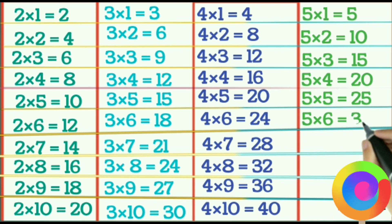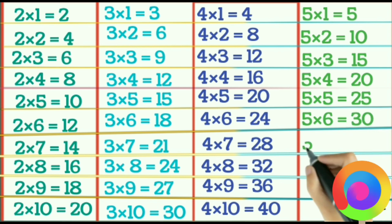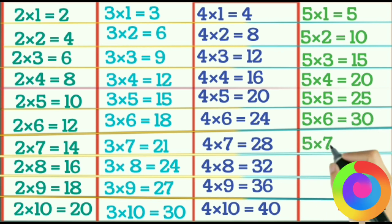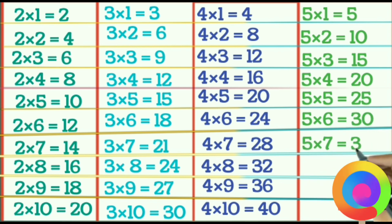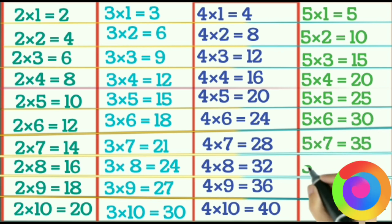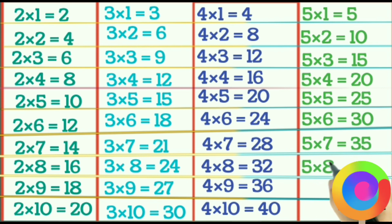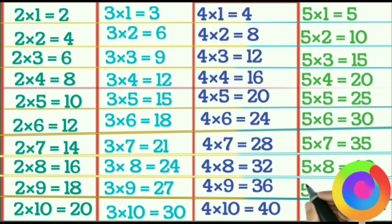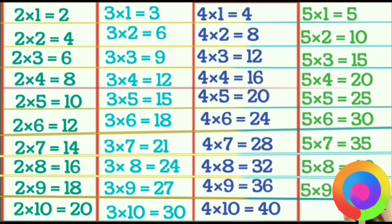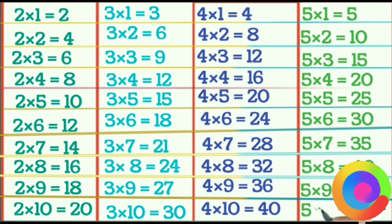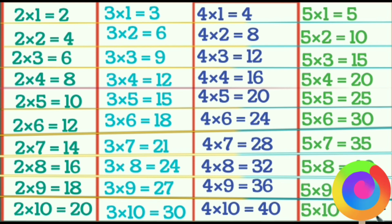5×6 is 30, 5×7 is 35, 5×8 is 40, 5×9 is 45, 5×10 is 50.